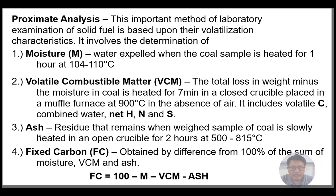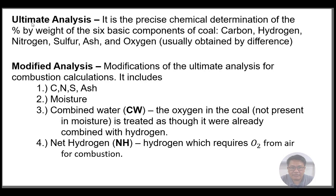Ash is the residue that remains when a weighed sample of coal is slowly heated in an open crucible for two hours at 500 to 815 degrees Celsius. Fixed carbon (FC) is obtained by difference: FC = 100% minus moisture, minus VCM, minus ash.